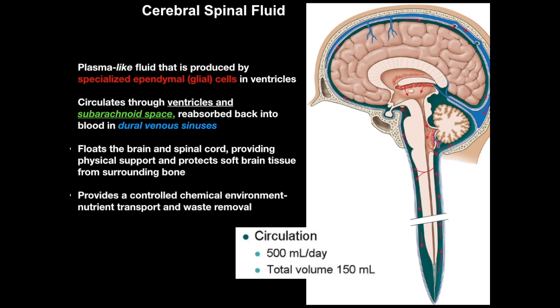Cerebral spinal fluid is produced in the ventricles and circulates through the ventricular system deep inside the brain, but it also flows out to the subarachnoid space surrounding the brain. One important function of CSF is physically protecting the delicate brain by providing cushioning, support, and buoyancy. The other function is physiological — it provides a controlled chemical environment for the brain tissue. Notably, about 500 mL per day circulates through these spaces, but the total volume the system holds is only about 150 mL, so CSF is continuously being made and reabsorbed.